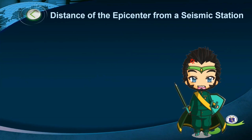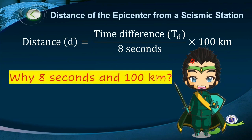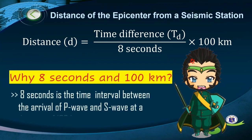In determining the distance of the epicenter from a seismic station, the following formula is used: Distance D equals time difference Td divided by 8 seconds, times 100 kilometers. This is because 8 seconds is the usual time interval between the arrival of the P wave and S wave at a distance of 100 kilometers.